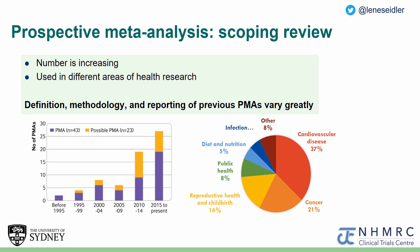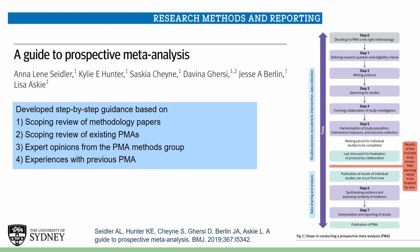In a recent scoping review, we found that the number of PMAs is increasing and that they are used across different areas of health research. However, we also found that the definition, methodology, and reporting of previous PMAs vary greatly. For this reason, we have written a step-by-step guide on how to conduct prospective meta-analysis, which has been published in the BMJ a few weeks ago. I will now walk you through each of these steps, with a particular focus on steps that are different to traditional retrospective meta-analysis.